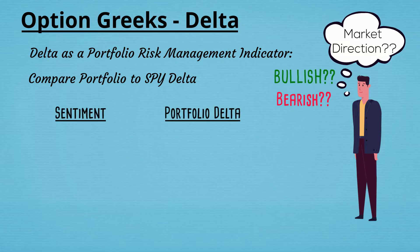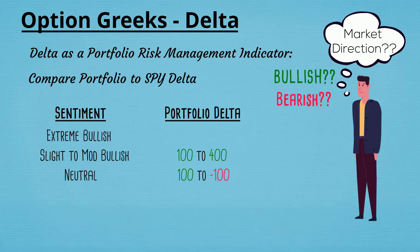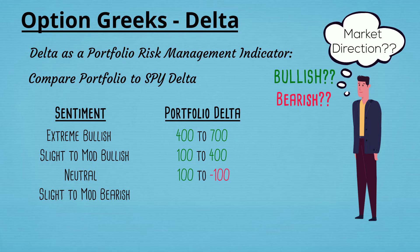Let's say over the next several weeks you're pretty much neutral on the market — you think it's going to trade sideways. If you're neutral, you should target an overall portfolio Delta of somewhere between 100 to negative 100. If you're slightly to moderately bullish, target a portfolio Delta of 100 to 400. If you're very bullish and think the market is going to make big gains, target a portfolio Delta of 400 to 700. On the bearish side the numbers are exactly the same with a negative sign: slightly to moderately bearish is negative 100 to negative 400, and extremely bearish is negative 400 to negative 700.